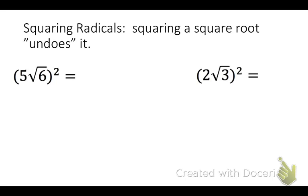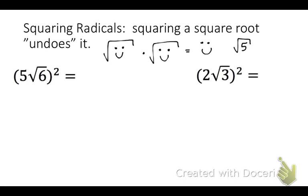Now we're going to talk about squaring radicals. Squaring a square root just undoes it. Instead of numbers, I'll use a smiley face: if we take the square root of a smiley face and multiply it by the square root of a smiley face, we just get out the smiley face — whatever was inside both radicals. With numbers, that means the square root of 5 times the square root of 5 equals 5.